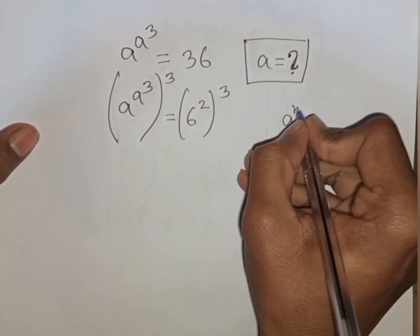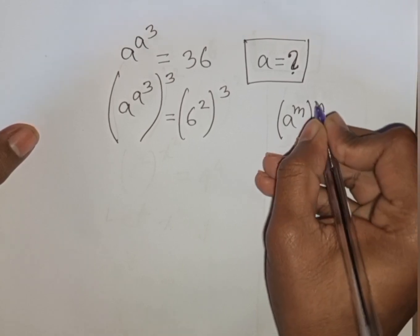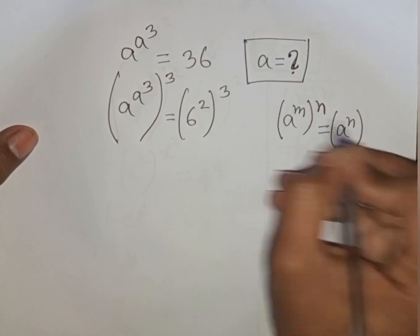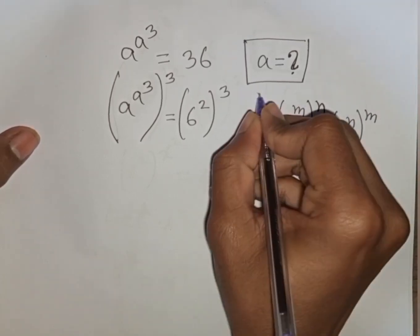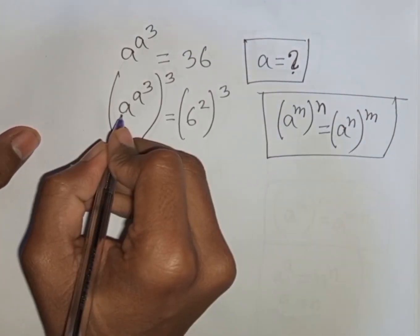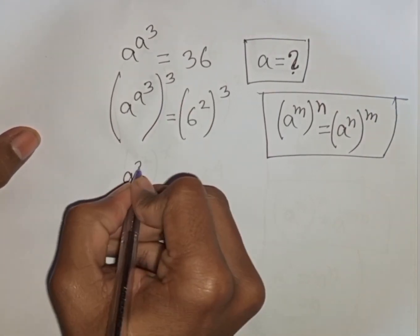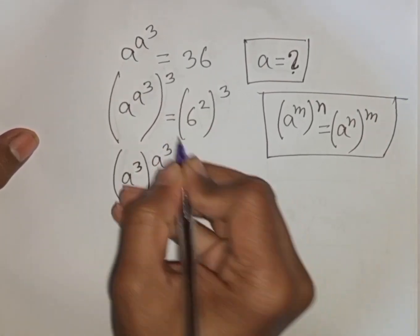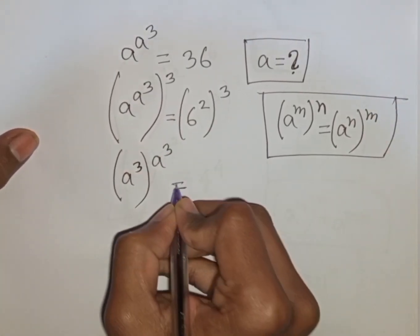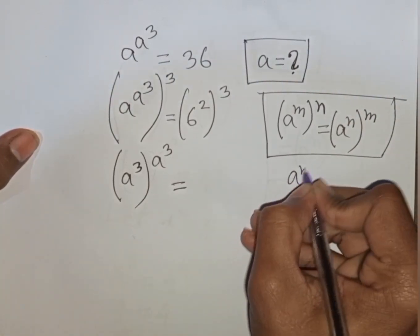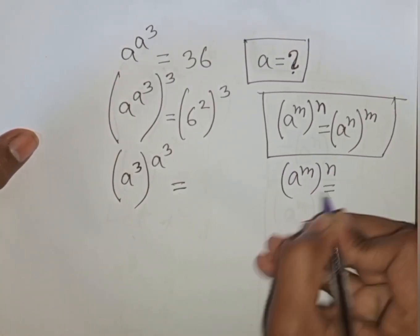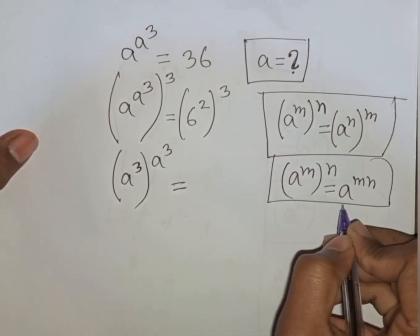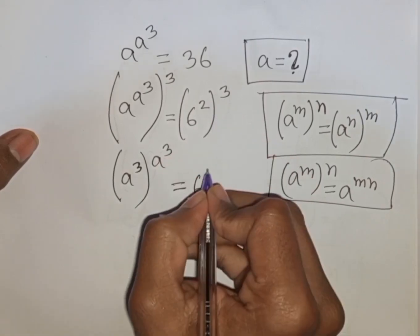You can apply the exponential rule that A^(A)^(M) is equal to A^(A×M). According to this rule, we can write A^(A³), then bracket power A³. According to the formula A^M raised to power N equals A^(M×N), we can write 6² times 3, that means 6^6.